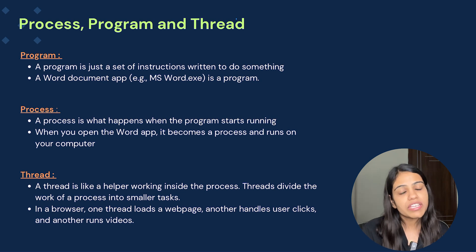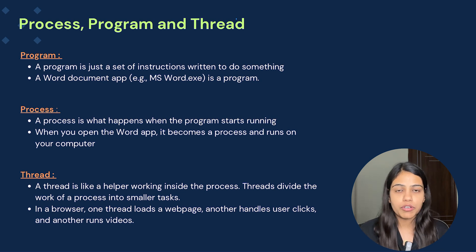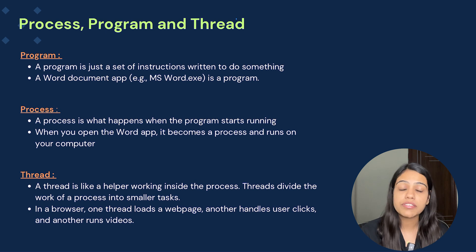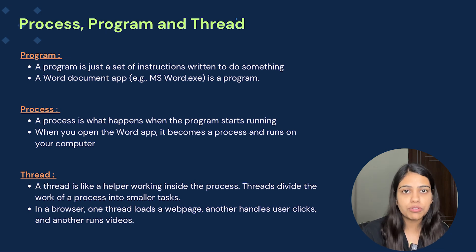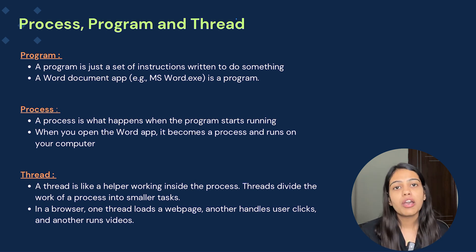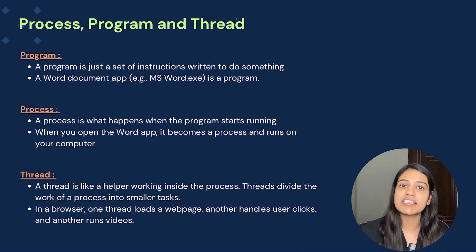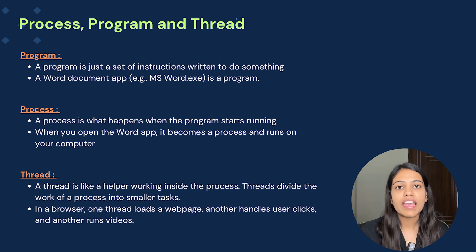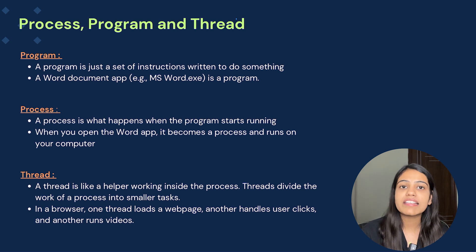So to give you a brief overview: programs are basically a set of instructions which is needed to do something. Processes are basically a program in execution, and threads are basically helpers of a process.